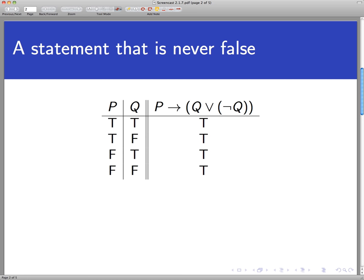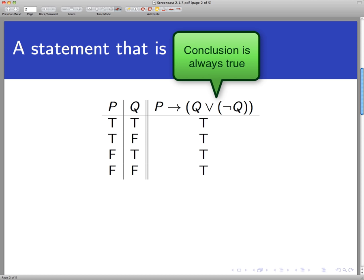It's pretty easy to understand why if you disengage from the truth table and just think about what this statement is saying. The conclusion of this statement here, the Q or not Q, well that's always true, right? It's either raining or it's not. It's either Monday or it's not. The conclusion of that statement is always true, and so there's no way the conditional statement is ever going to be false.